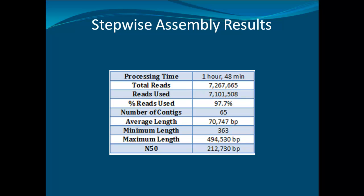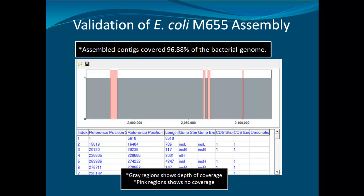After assembly, I took the assembled output file and completed an alignment to the E. coli M655 reference genome. The illustration shows the coverage curve report for the entire bacteria genome that has at least one contig mapped to it. The pink regions indicate areas with no coverage. The gray regions indicate depth of coverage. About 96.88% of the bacteria genome was covered by at least one contig, leaving only 3.12% of the genome with no coverage.